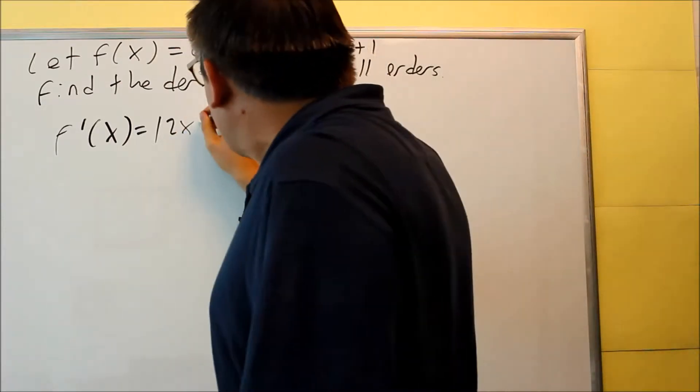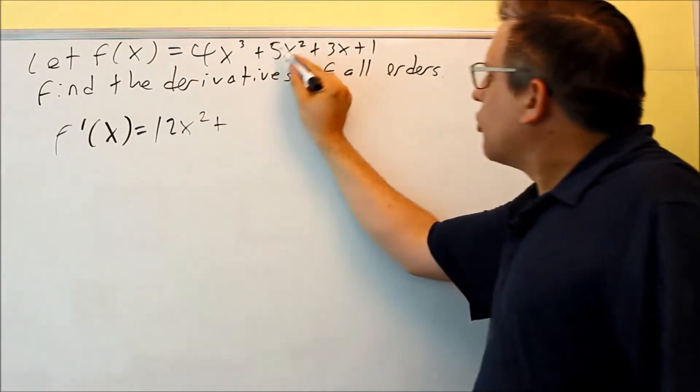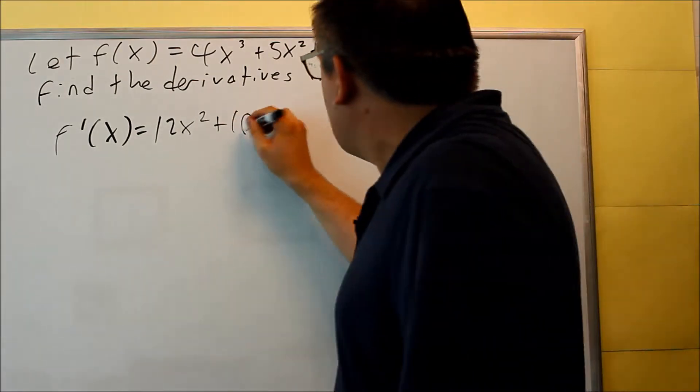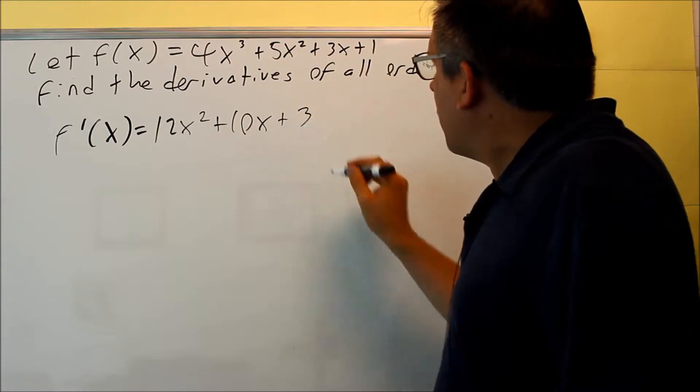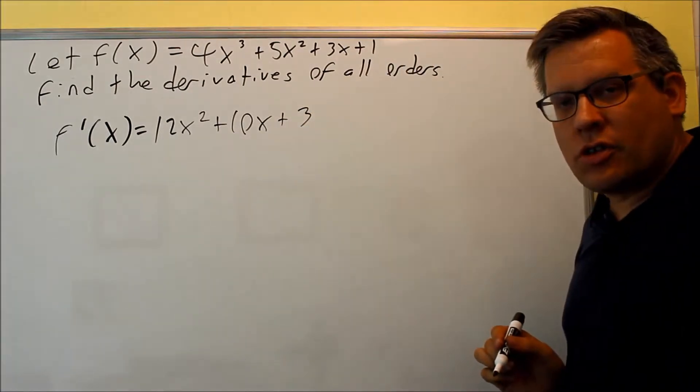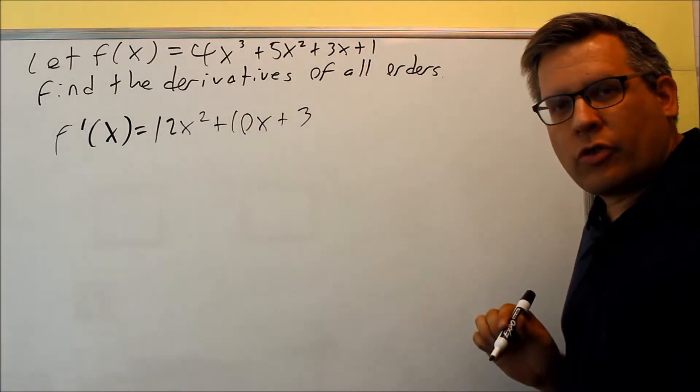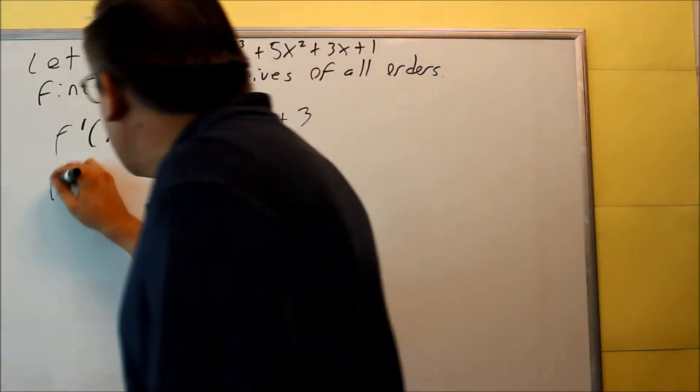These will multiply. That's 10x to the first power. There's a constant there. You'll get three and then the derivative of one is going to be zero. That's the first derivative. We've done that already a lot in this section.